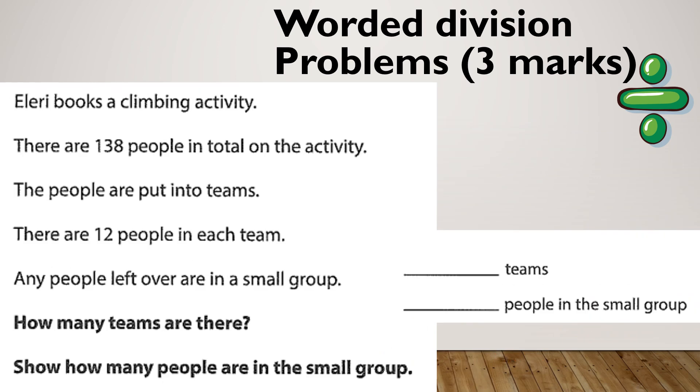Let's give another one a go. Ellery books a climbing activity. There are 138 people in total on the activity. They're put into teams, 12 people in each team, and people left over in a small group. How many teams and how many are in the small group? Pause and give it a go.